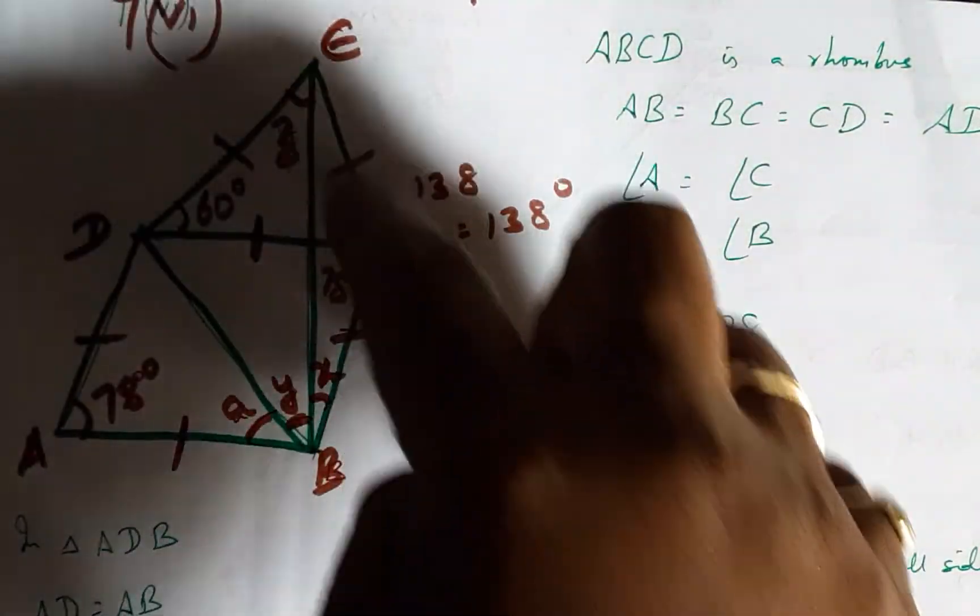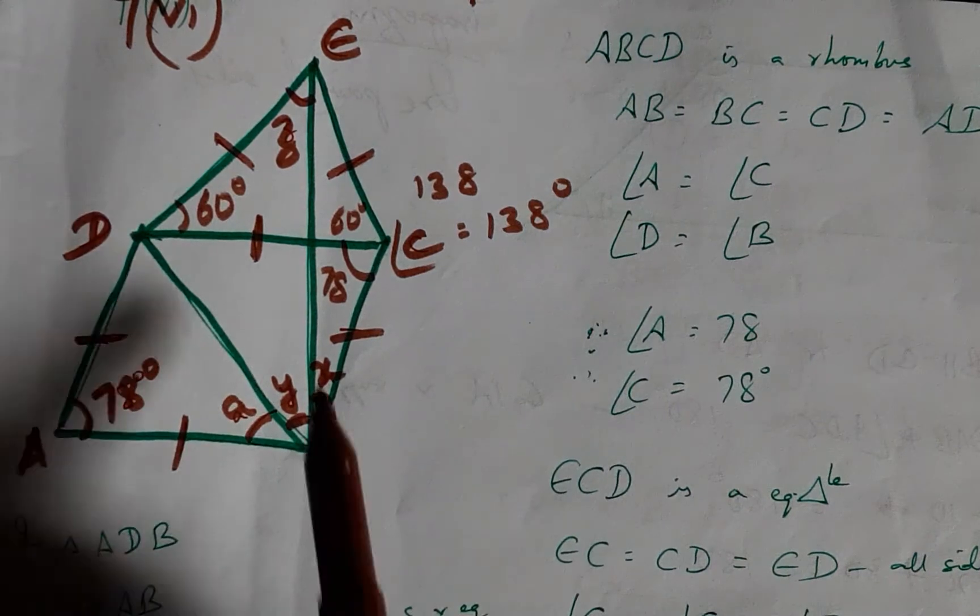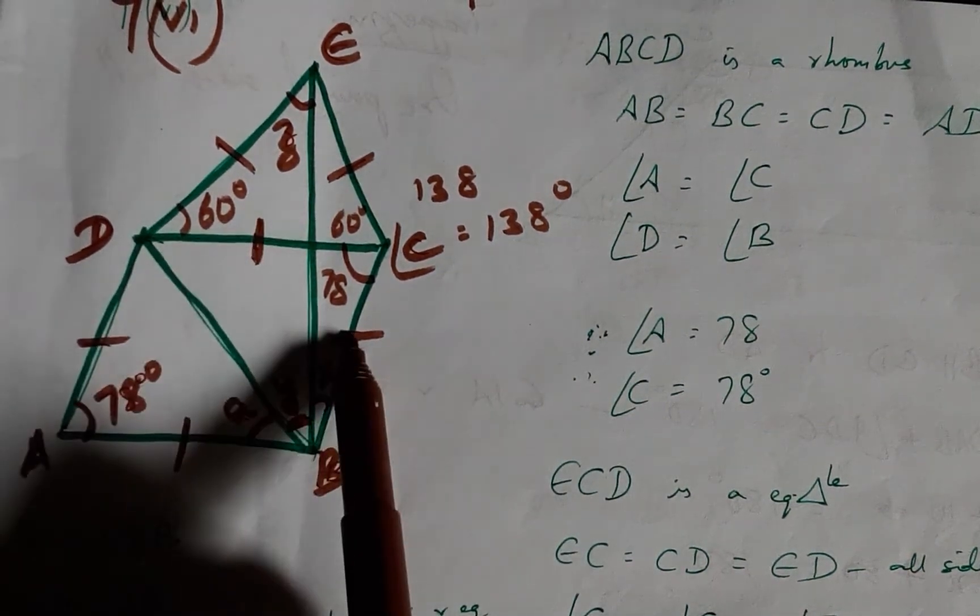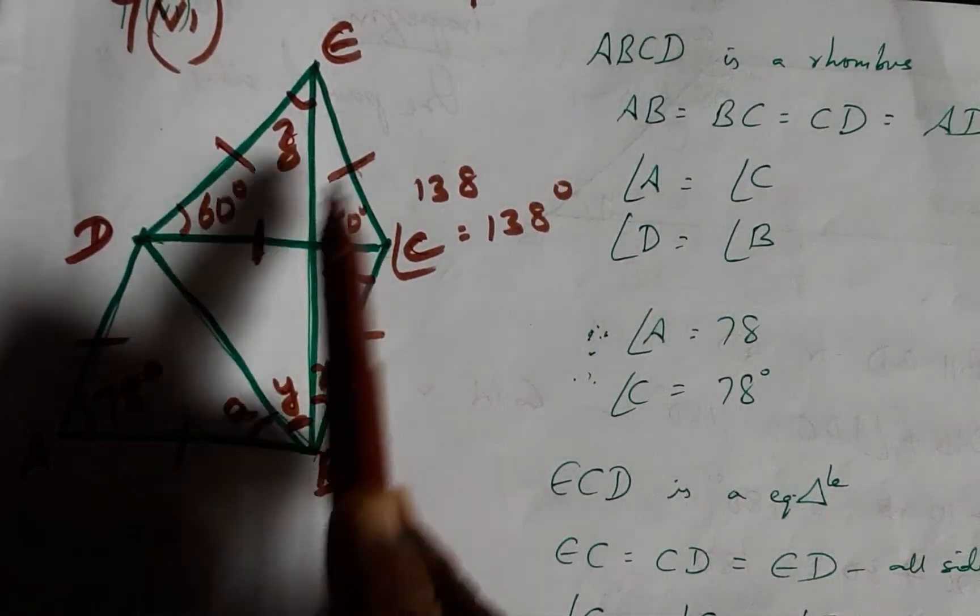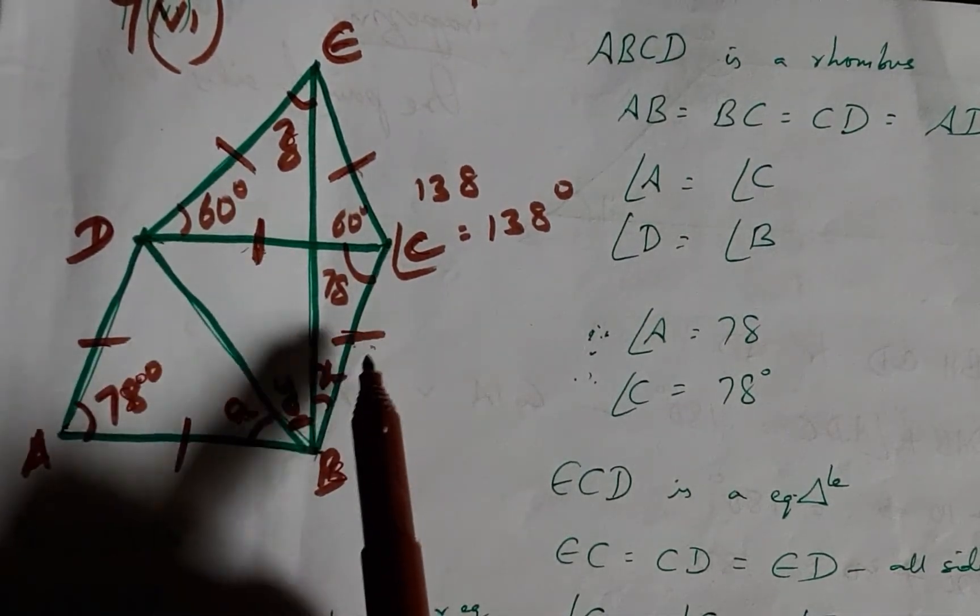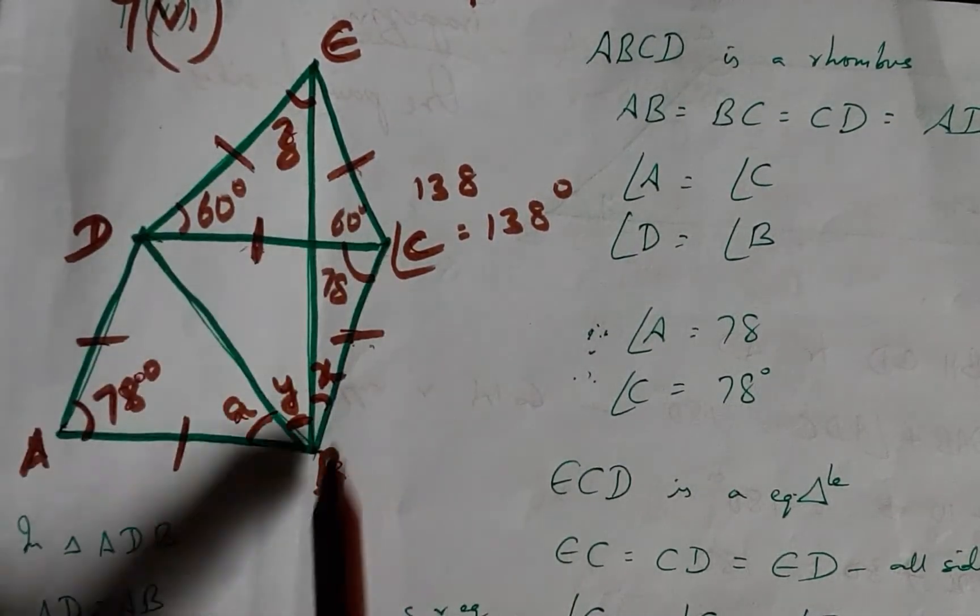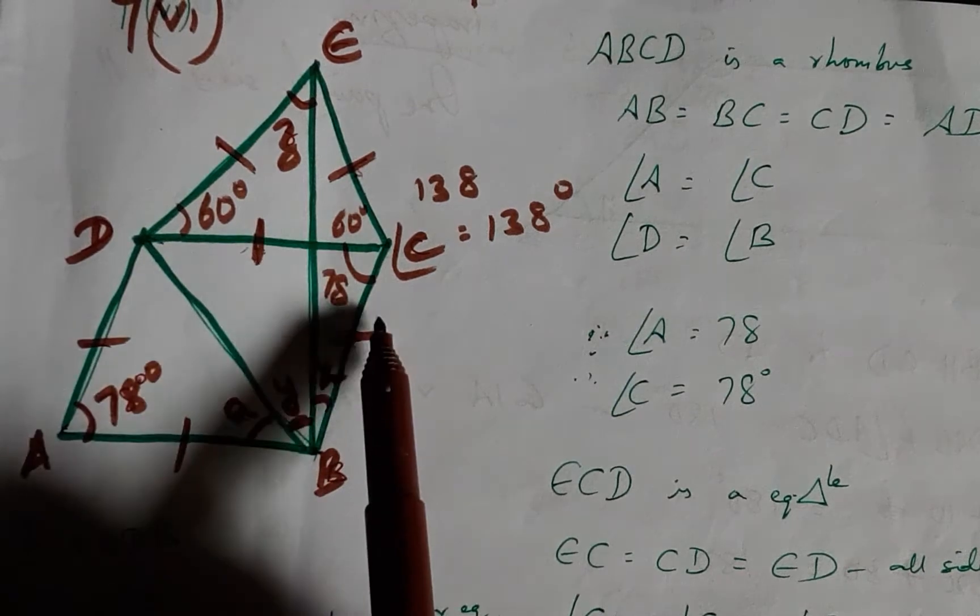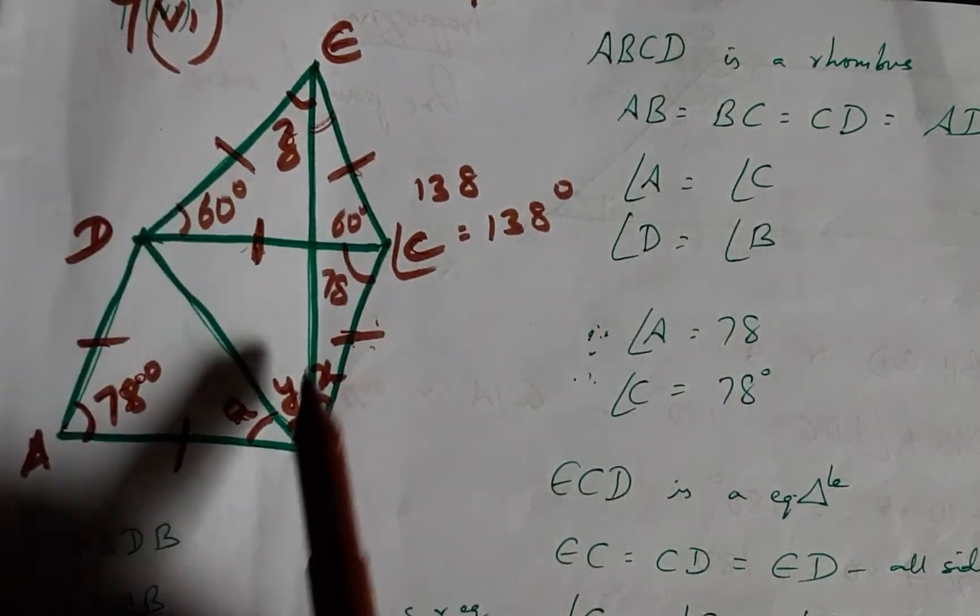Now, coming into triangle ECB, we have been given that this and this are equal. Therefore, since these two are equal, these two are also equal. EC is equal to CB, and these sides being equal, the angles will also be equal.